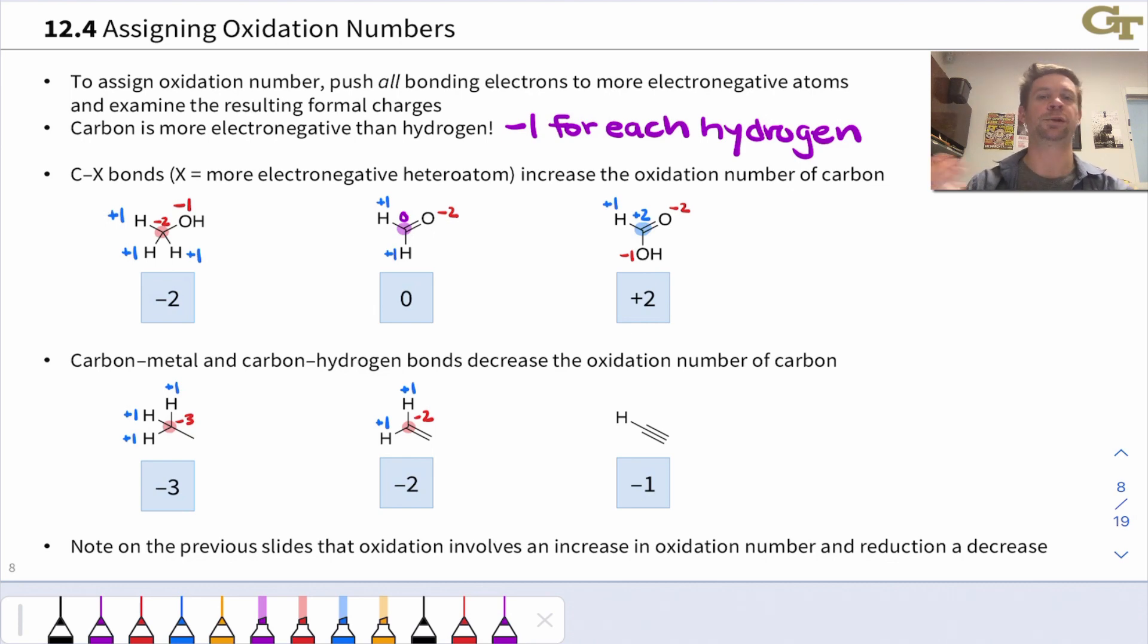Finally, in the case of the alkyne, it's the same dance again. We lose the elements of H2. Now we've only got one hydrogen linked to that carbon highlighted in red, meaning that carbon is now in the negative one oxidation state. Again, oxidation has occurred. So now that we've seen how to assign oxidation number, you'll note that oxidation always involves an increase in oxidation number, while reduction involves a decrease.